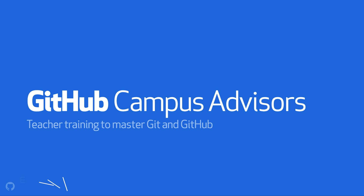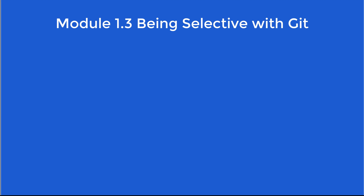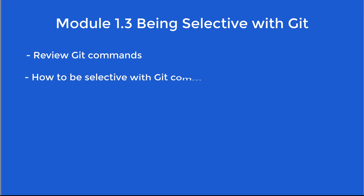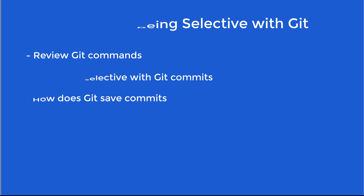You now have a better sense of the Git workflow, but now we need to build on your understanding of what Git is doing under the hood. In this video, we'll revisit some of the commands we learned and discuss why you want to be selective about what items you add to your repository when you make changes to your project. We'll also go over how Git stores our snapshots, or more correctly, our commits. The more you understand how Git works, the better equipped you'll feel about using it.